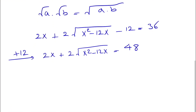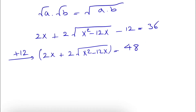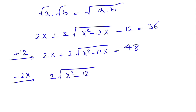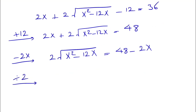We still have a square root on one side, so squaring again would create another square root — that's not the way to go. Instead, we subtract 2x from each side to isolate the radical: 2√(x²−12x) equals 48 minus 2x. Dividing each side by 2 gives √(x²−12x) equals 24 minus x.